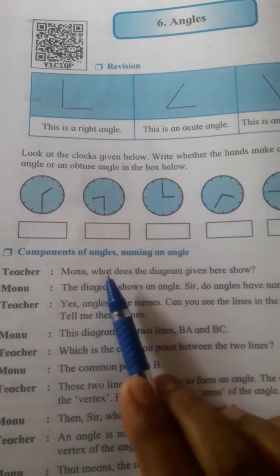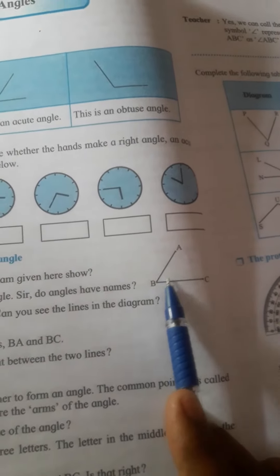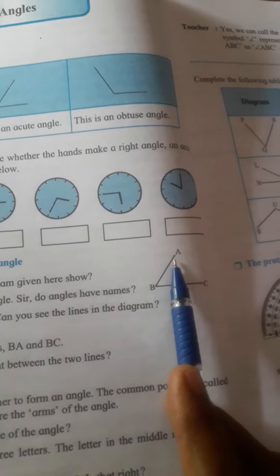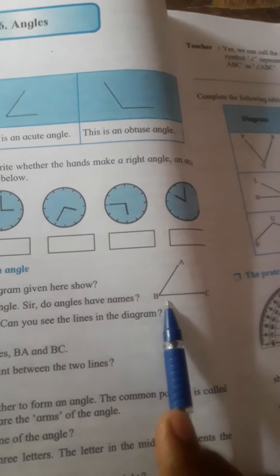See, an angle is made up of two arms. Here is a given angle where AB and BC are two sides or arms, and B is